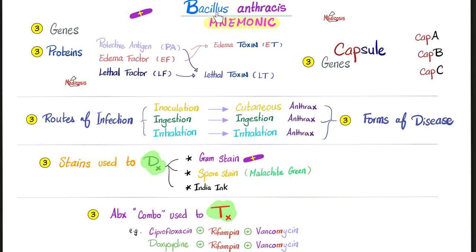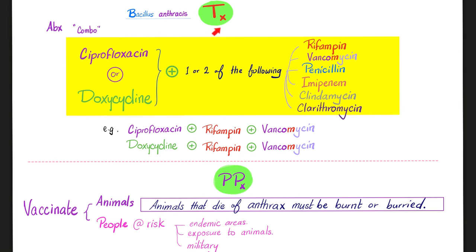So now the mnemonic gets better, because we added three stains to diagnose Bacillus anthracis: the gram stain, the spore stain with malachite green, and india ink — which stains everything but the capsule.